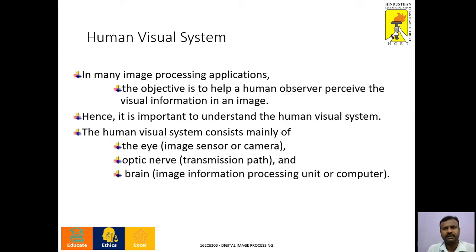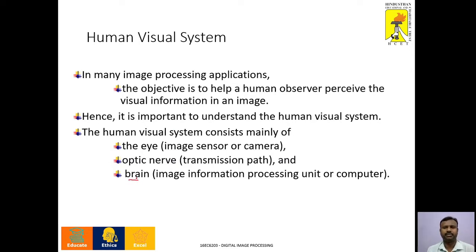In our visual system, we have three parts. The first starts from the eye, which is acting as a sensor or camera. The second is the optic nerves, which transmit the information to the brain. The third part is the brain, which is actually acting as a CPU — central processing unit — where the actual information is interpreted.